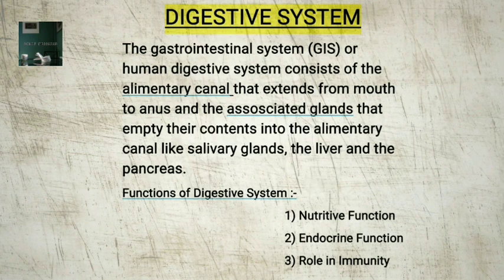The gastrointestinal system or human digestive system consists of the alimentary canal that extends from mouth to anus, and the associated glands that empty their contents into the alimentary canal, like salivary glands, the liver, and the pancreas.